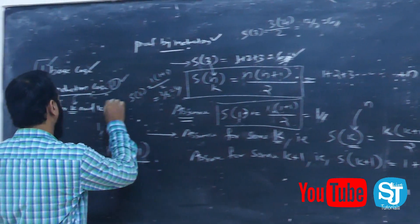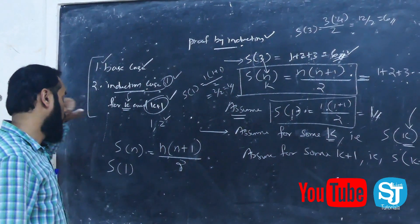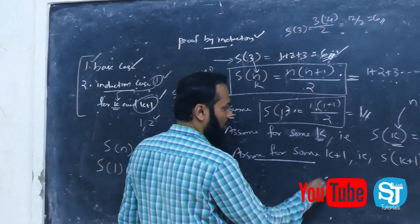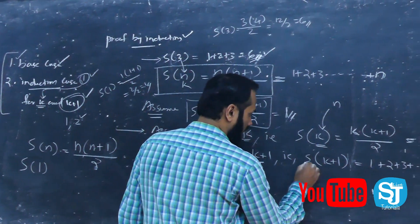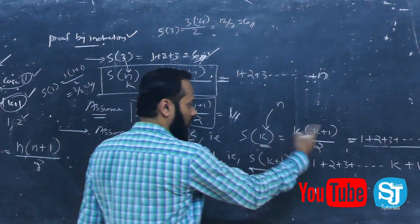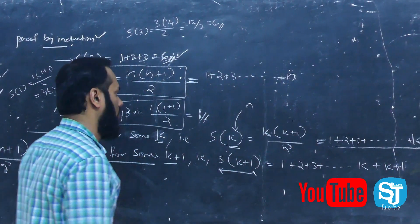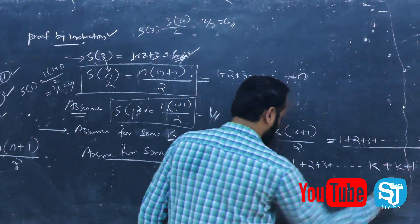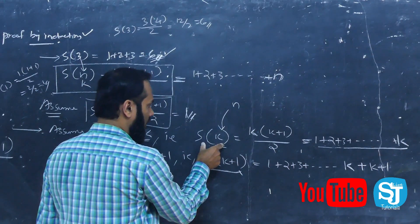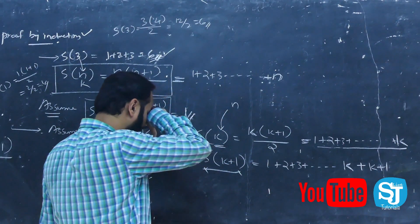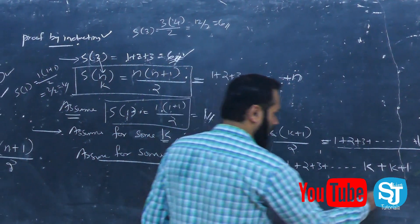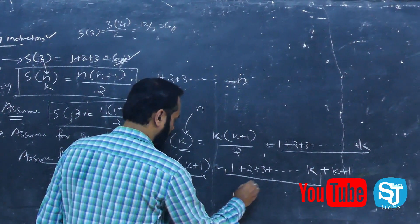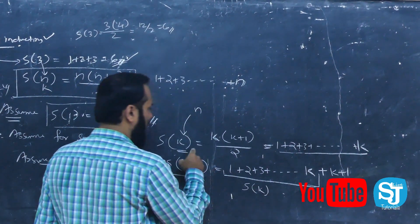The next step is to check k plus 1 in the proof by induction. Assume for k plus 1: S of k plus 1 equals 1 plus 2 plus 3 plus ... plus k plus k plus 1. That is S of k plus the next element k plus 1. Substituting: S of k equals k(k+1)/2.